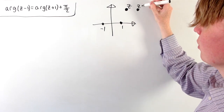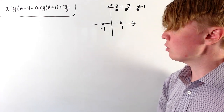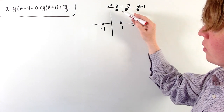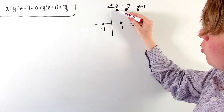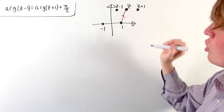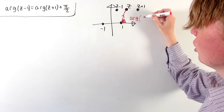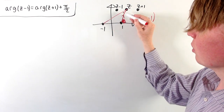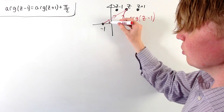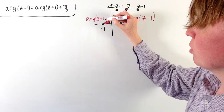The point z plus 1 would just move 1 over to the right, and z minus 1 would move 1 unit over to the left. It helps to think of z plus 1 and z minus 1 as vectors rather than as points in complex space. Going from the origin to z minus 1 is the same as going from 1 to z, so this angle here is going to be the argument of z minus 1. Similarly, going from minus 1 to z corresponds to going from the origin to z plus 1, so this angle here is the argument of z plus 1.